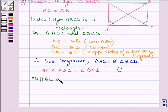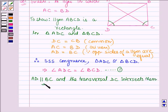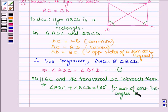And the transversal DC intersects them. This implies that angle ADC plus angle BCD equals 180 degrees, since if two parallel lines are intersected by a transversal, the sum of consecutive interior angles is supplementary, that is 180 degrees.